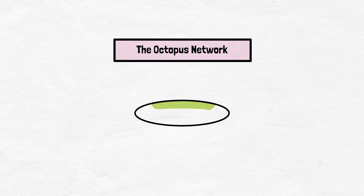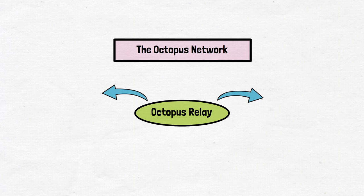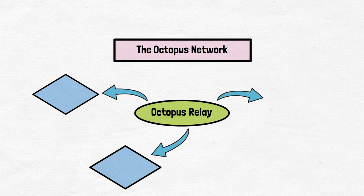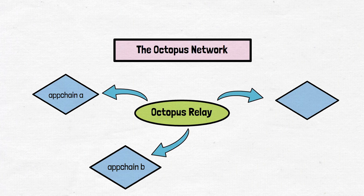According to the official website, the Octopus Network declares itself as a multi-chain interoperable crypto network for launching and running Substrate-based, EVM-compatible application-specific blockchains, also known as app chains. Octopus Relay is the core of the Octopus Network — a set of smart contracts running on the NEAR blockchain, the main chain, that implements the security leasing market.